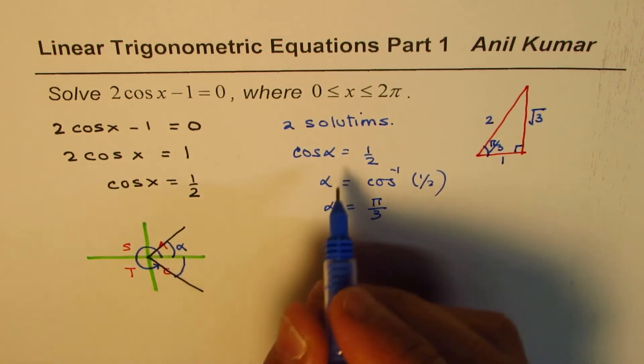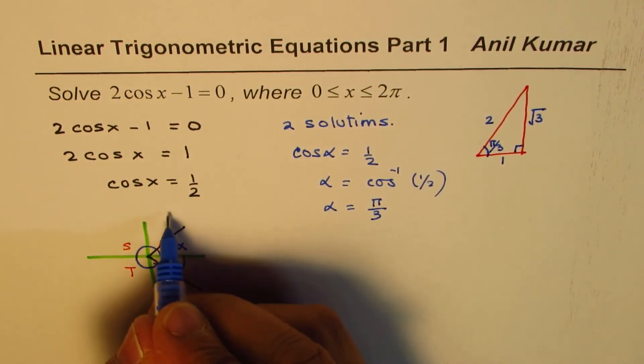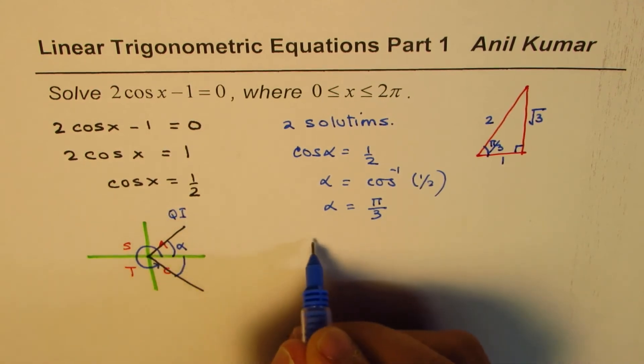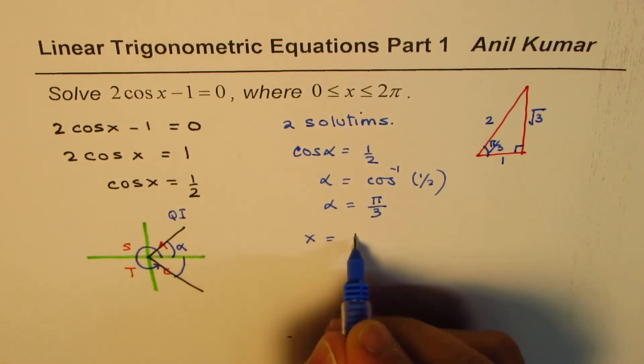So α is π/3, x value, which is for quadrant 1. So the x value, one of them, is π/3.